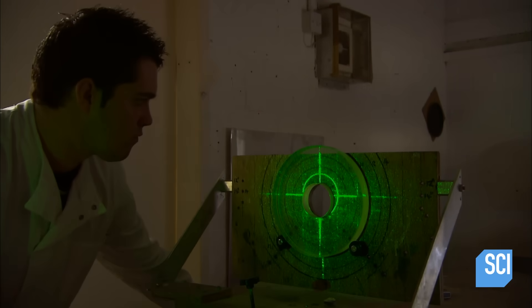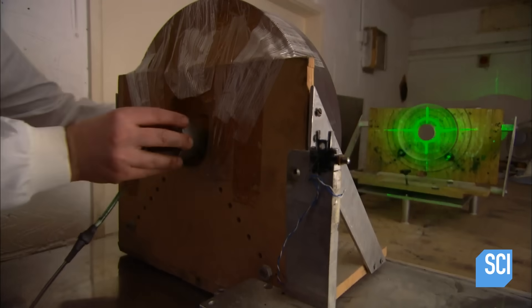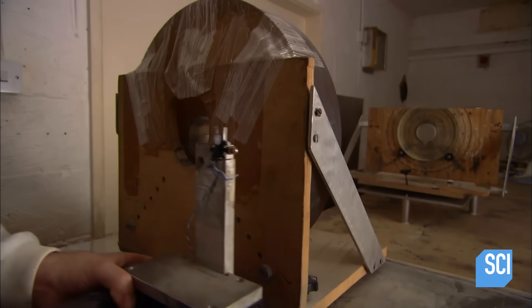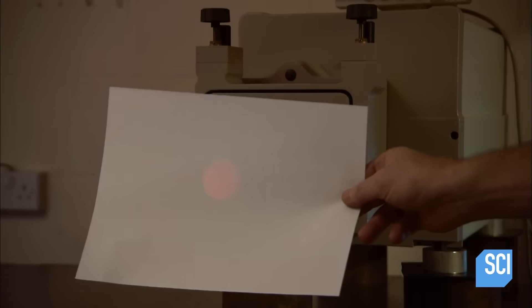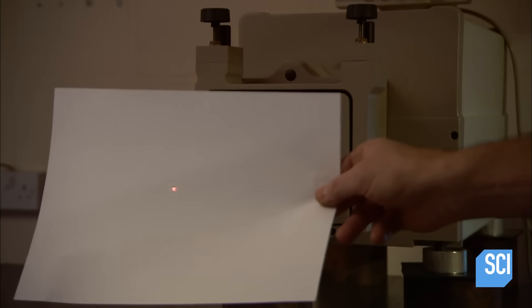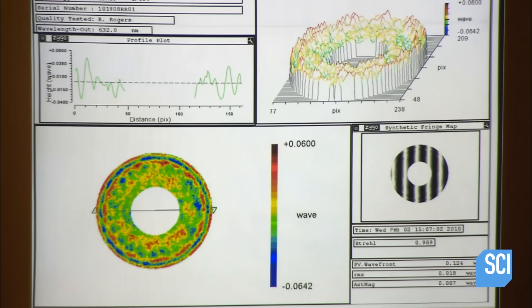In the laboratory, a technician compares the primary mirror glass to a grid to verify that the dimensions are accurate. He aims a laser at the glass. A computer analyzes the reflected light. If the angle is off by one thousandth of the width of a hair, the telescope's image could be blurry.